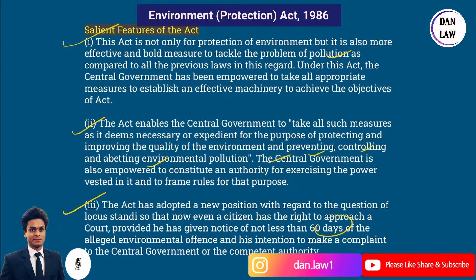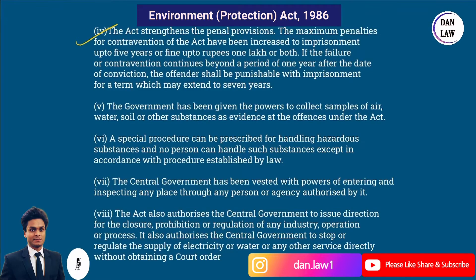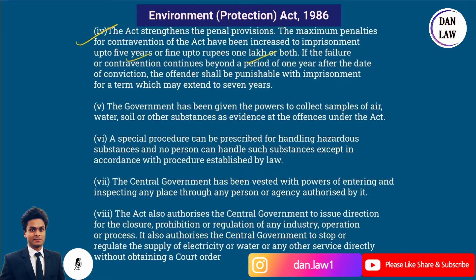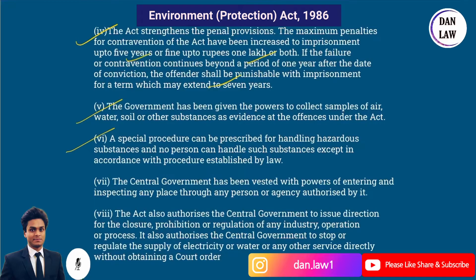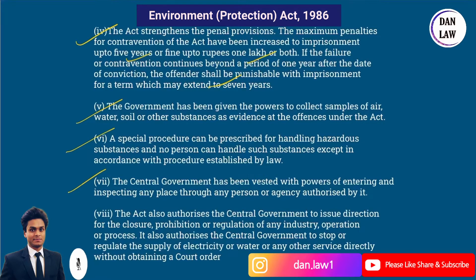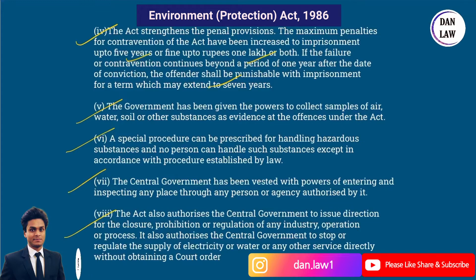The Act strengthens the penal provisions. The maximum penalties for contravention have been increased to imprisonment up to five years or fine up to one lakh rupees, or both. If the failure or contravention continues beyond a period of one year after the date of conviction, the offender shall be punishable with imprisonment for a term which may extend to seven years. The government has also been given powers to collect samples of air, water, and soil. A special procedure can be prescribed for handling hazardous substances, and no person can handle such substances except in accordance with the procedure established by law. The central government has been vested with powers of entering and inspecting any place through any person or agency authorized by it.